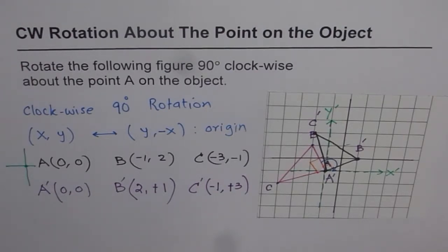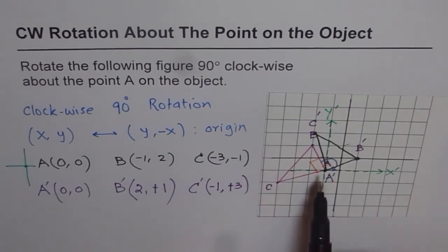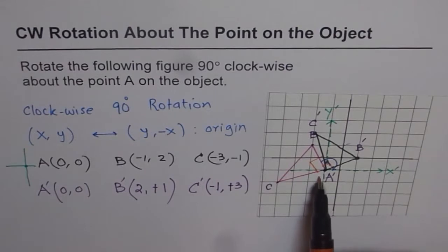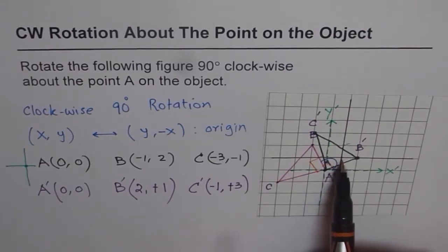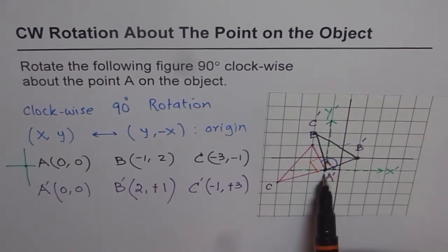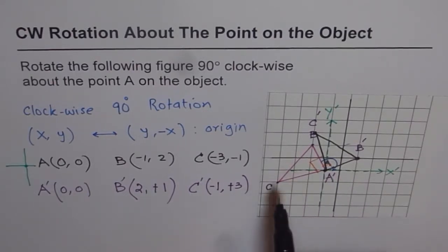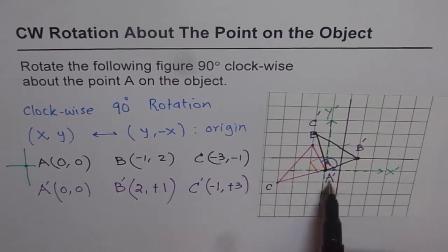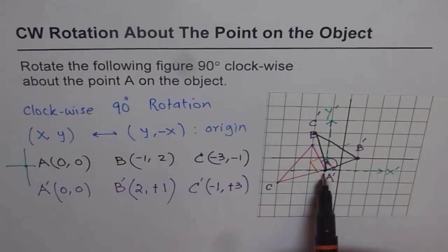Here, we had to rotate about a point that is not at the origin. Since the point was away from the origin, we made a new coordinate plane with a shifted coordinate axis so that A becomes the origin.